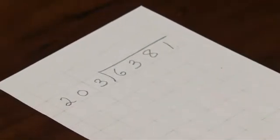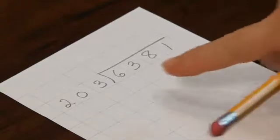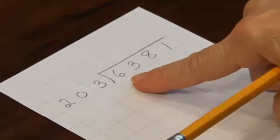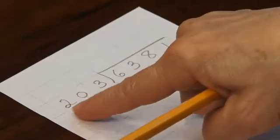This is group division done abstractly, everything recorded on paper. So the problem is 6,381 divided by 203.